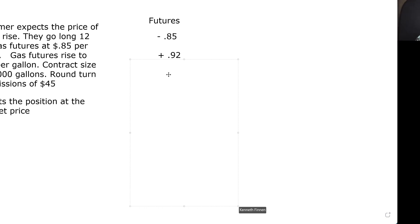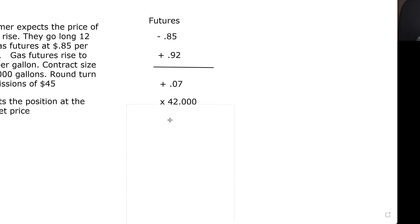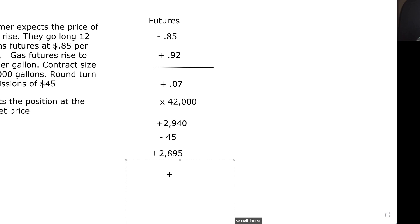Buy is negative, sell is plus — get that in your head. Now we do the math: plus and minus, so subtract. We have a 7-cent difference. Bring the bigger symbol down — it's a plus — so positive 7 cents. Multiply by the contract size of 42,000, giving us a profit of $2,940. But we're not done — we also pay a commission. Commission is always a minus, so we subtract $45. That's $2,895 profit per contract after commissions. Then we multiply by 12 contracts: 2,895 times 12 equals $34,740.